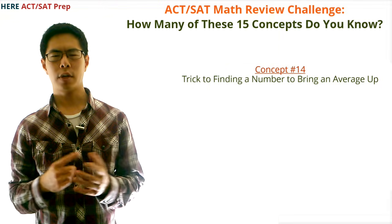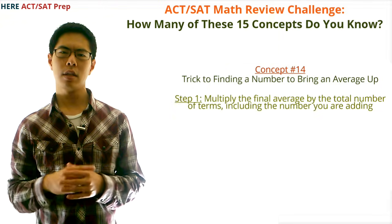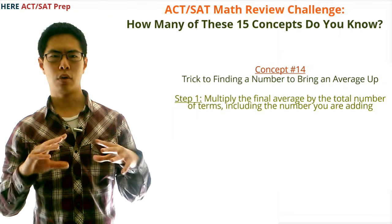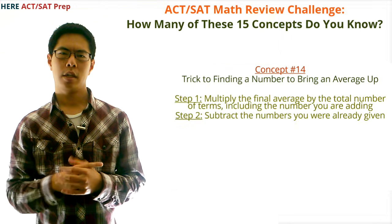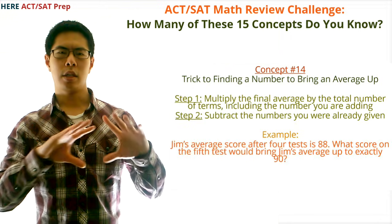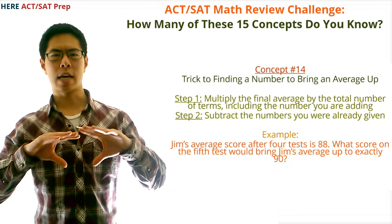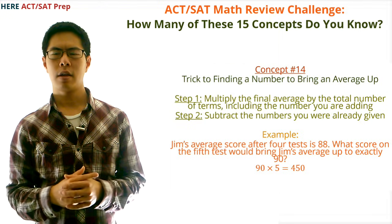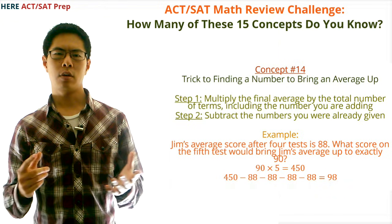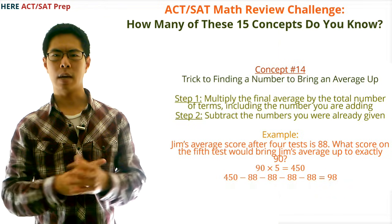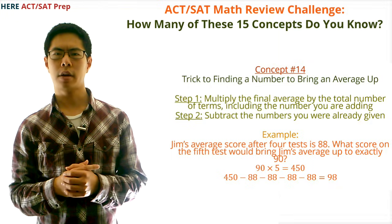Concept number fourteen: the trick to finding a number that will bring an average up. Step 1: multiply the final desired average by the total number of terms including the number you are adding. Step 2: subtract the numbers you were already given. For example, Jim's average after four tests is 88 — what score on the fifth test brings the average to 90? First, 90 × 5 = 450. Second, 450 − (88 × 4) = 98. The answer is 98.